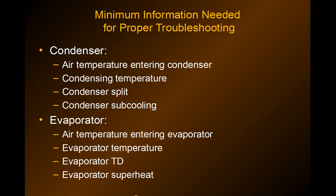The minimum information needed for proper troubleshooting is the air temperature entering the condenser, the condensing temperature, condenser split, and condenser subcooling. You'll find the rule-of-thumb values for the different types of systems on the cheat sheet.